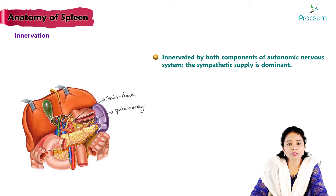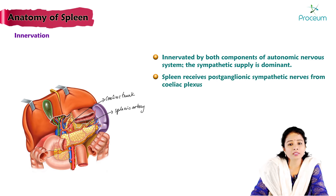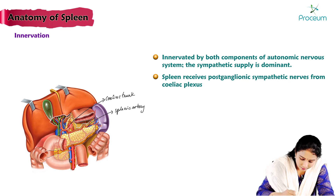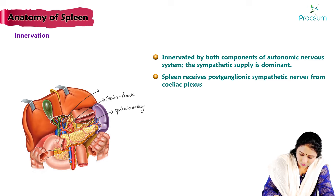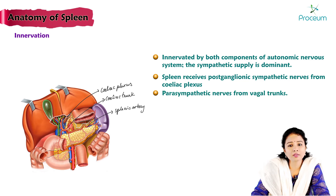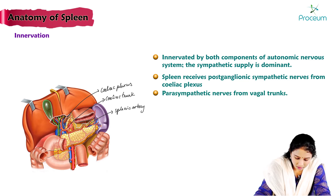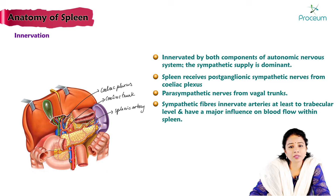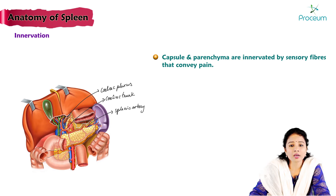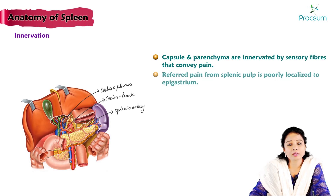Innervation of the spleen: the spleen is innervated by both components of the autonomic nervous system. The sympathetic supply is dominant, with postganglionic sympathetic fibers from the celiac plexus, and parasympathetic fibers from the vagal trunks. Sympathetic fibers innervate the arteries at least to the trabecular level and have major influence on blood flow within the spleen. The capsule and parenchyma are innervated by sensory fibers that convey pain; referred pain from the splenic pulp is poorly localized to the epigastrium.